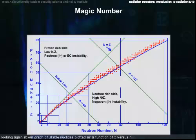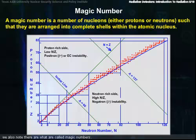Looking again at our graph of stable nuclides plotted as a function of Z versus N, we also note that there are what is called magic numbers. These magic numbers are favored by the nucleus, just as closed atomic shells make atoms unreactive chemically because they're already at their lowest energy. Thus, noble gases are produced by closed shells.